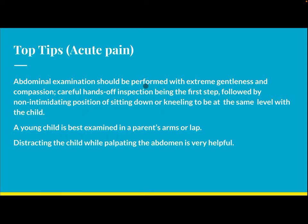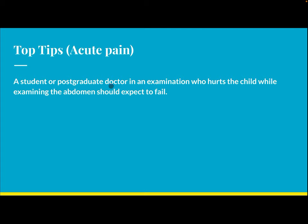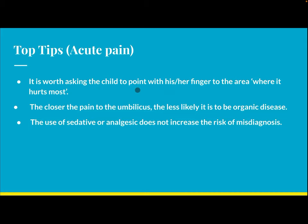Top tips: Abdominal examination should be performed with extreme gentleness and compassion, with careful visual inspection being the first step, followed by adopting a non-intimidating position — sitting down or kneeling to be at the same level as the child. A young child is best examined in a parent's arms or lap. Distracting the child while palpating the abdomen is very helpful. Ask the child to point to where it hurts most — the closer the pain to the umbilicus, the less likely it is to be organic disease.